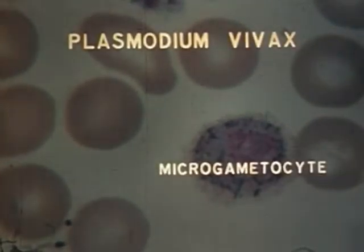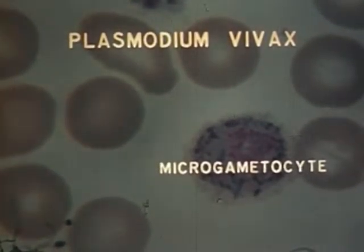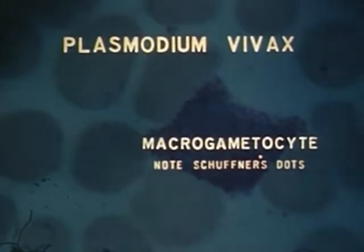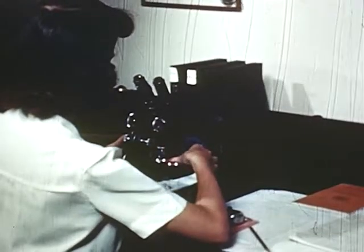The male or microgametocyte has pale cytoplasm and large, light, diffused chromatin, usually centrally placed. The female or macrogametocyte takes a darker stain than the male, and the chromatin is dark red, compact, and usually eccentric. So much for Plasmodium vivax.